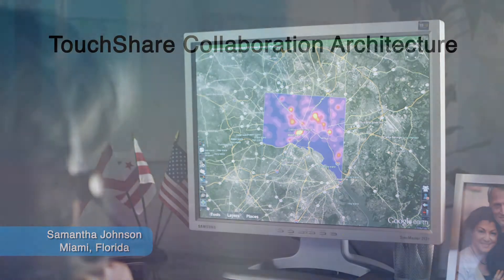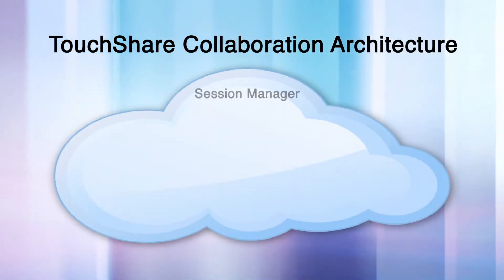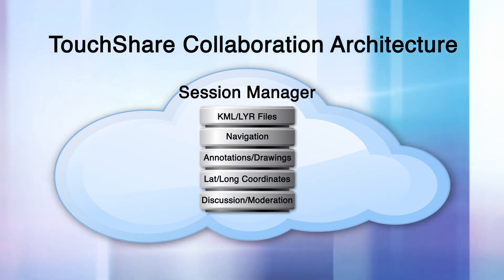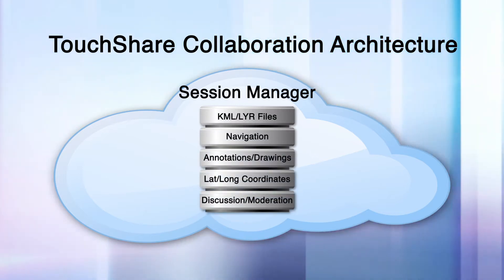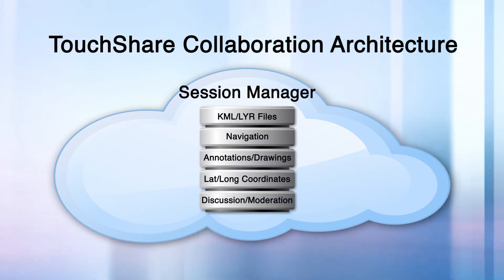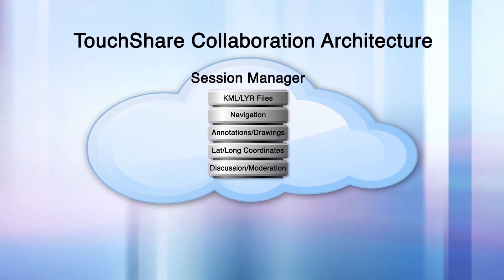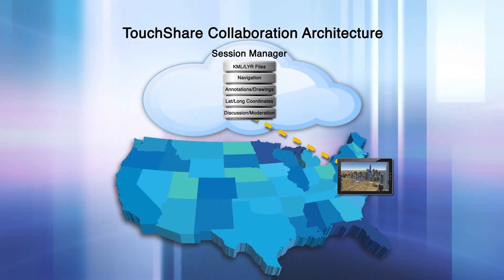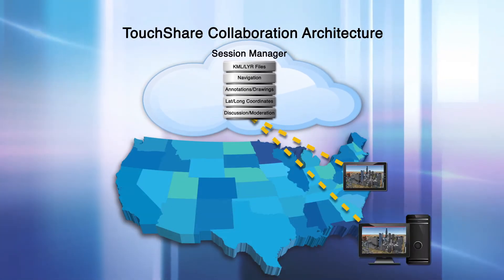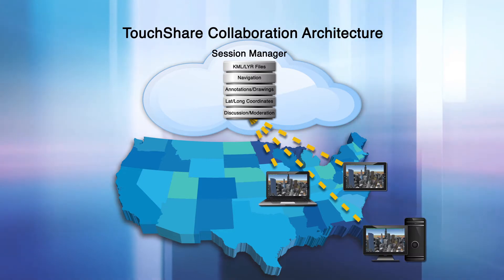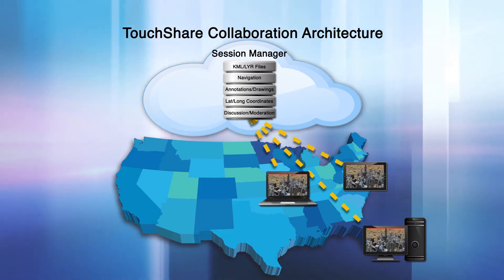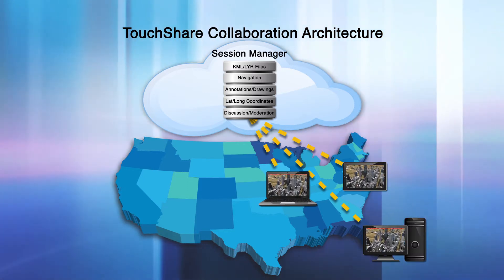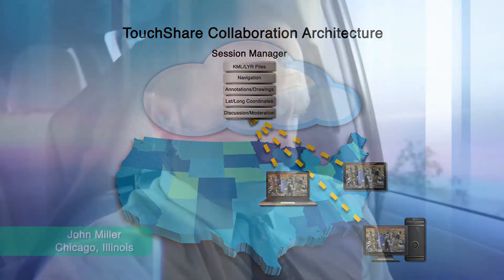This is achieved by leveraging local datasets and sharing only coordinates, camera angles, KML or LYR files, drawings, and annotations across the network. This allows users to rapidly distribute real-time information, analyze, and make smarter decisions faster using a lightweight common operating picture.